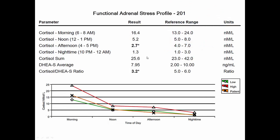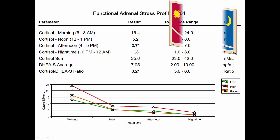Here's a stage two patient. You can see cortisol is between 23 and 42 units and we're starting to have some rhythm issues. The noon-to-afternoon rhythm is off — morning and noon readings are in the normal range but at the low end, and afternoon drops out a bit. So this patient is sitting right at stage two. DHEA is pretty good, but their cortisol rhythm clearly indicates stage two. The pattern reads: normal, normal, low, normal.